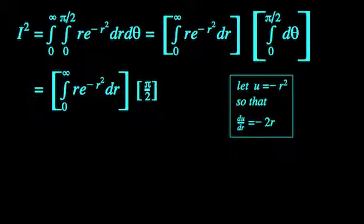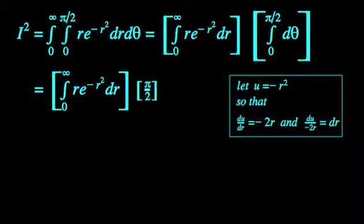We will let u equal negative r squared so that we get negative 2r for du dr and a value of du divided by negative 2r for dr. I suppose that you can take the time to work out the value of r in terms of u, but as you'll see in a moment, that's not really necessary here.